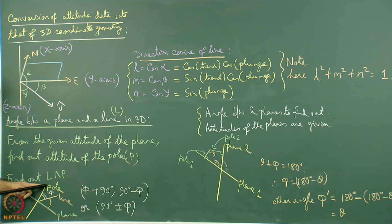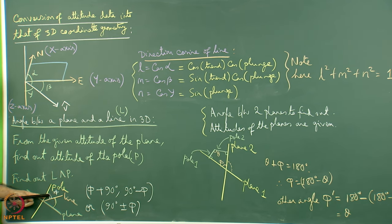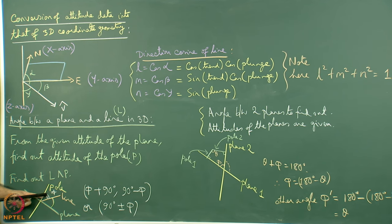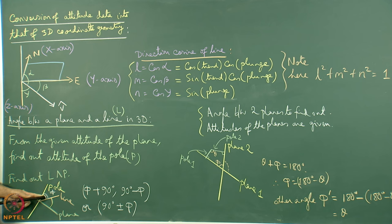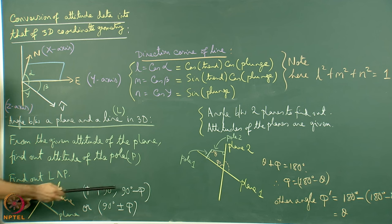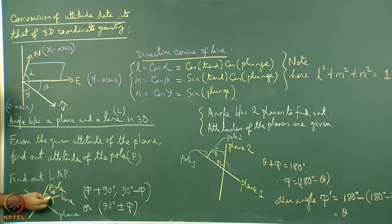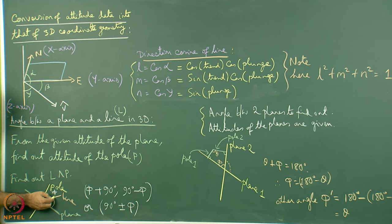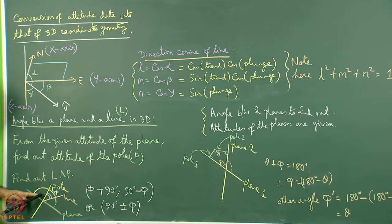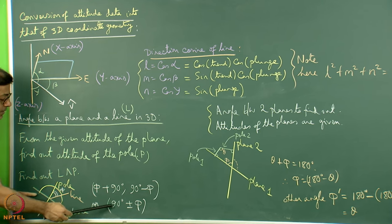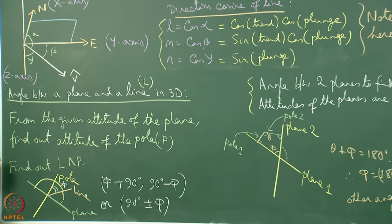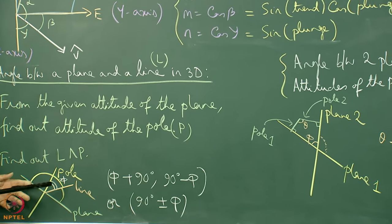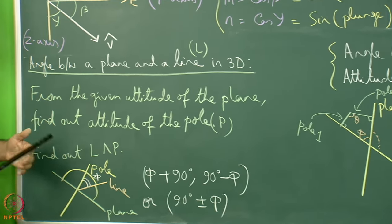From the direction cosines of the pole and the direction cosines of the line, we apply the standard coordinate geometry formula for the angle between them. Once this angle phi is found, the angle between the line and the plane equals 90° − phi, and the other angle is 90° + phi. So the answer is 90° ± phi. This is not yet dealing with stress or strain — we are just getting conversant with what we learned about direction cosines.